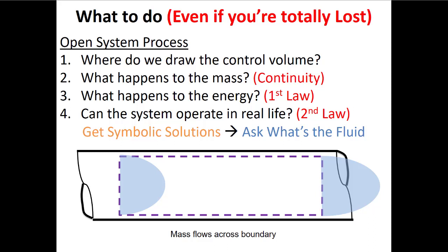We've been looking at open system processes. We need to learn where to draw the control volume, figure out what happens to the mass, then conserve energy. And if we're looking at a process we don't know is possible, we need to do a second law analysis to see if that open process is generating entropy, because every process must generate entropy in order to proceed in the universe.